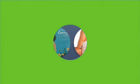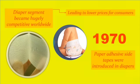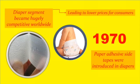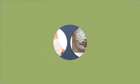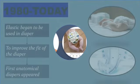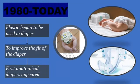In 1970s, diapers became hugely competitive worldwide which led to lower prices for consumers. This time included paper adhesive side tapes. And the last era of the revolution was in 1980s. It began to be used to improve the fit of the diaper which changed to a rectangular shape. That's all.